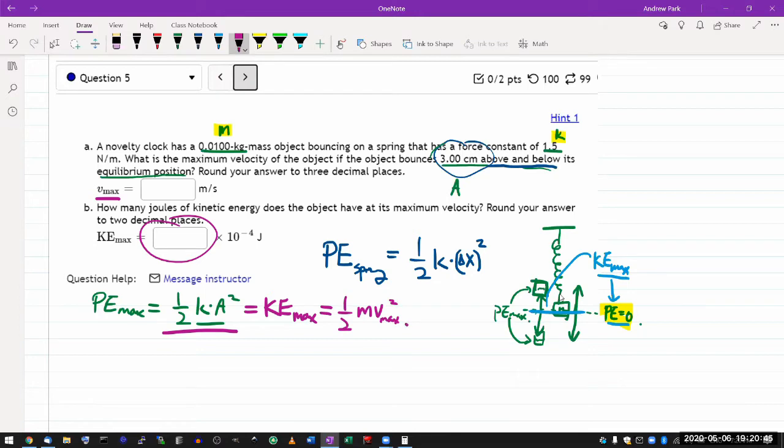So to get an answer to part A, you solve this for v max. When you do that, this is what you get. V max is equal to the 1 half's cancel. I have square root of k over m times square root of a squared or a.